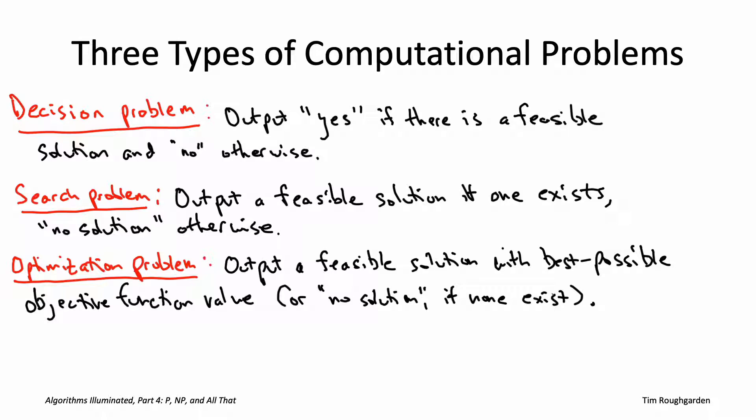All three types of problems reference a feasible solution, and what that actually means is problem-specific. Sometimes it's going to correspond to satisfying assignments, or it might correspond to Hamiltonian paths, or traveling salesman tours, whatever. And for optimization problems, the objective function is also going to be problem-specific: minimizing the total cost, maximizing the total value, etc.